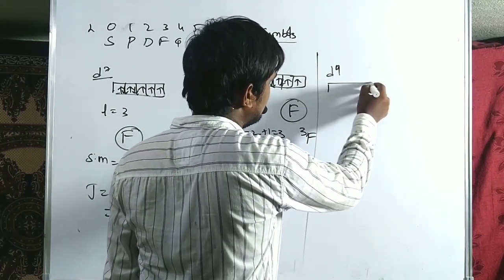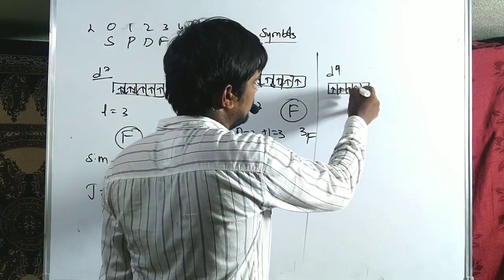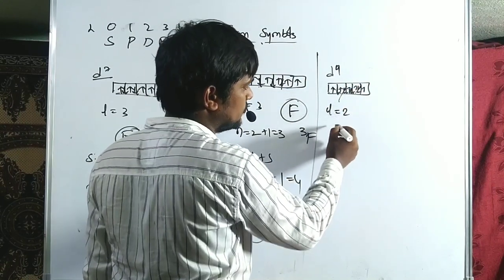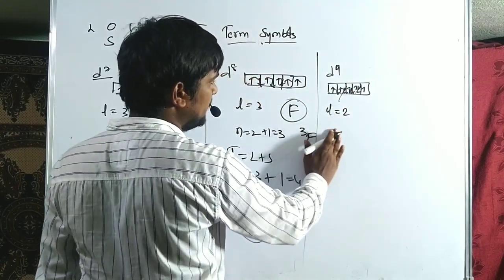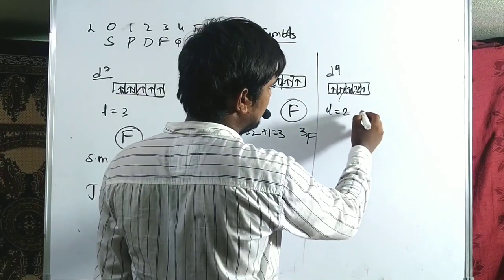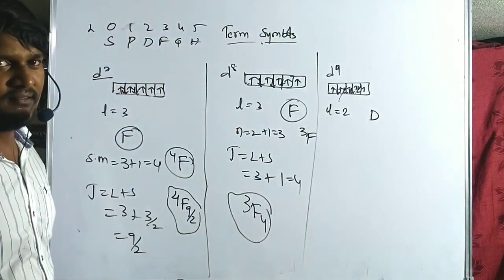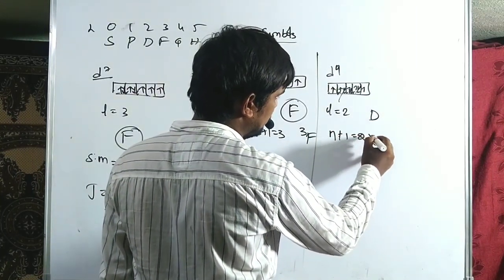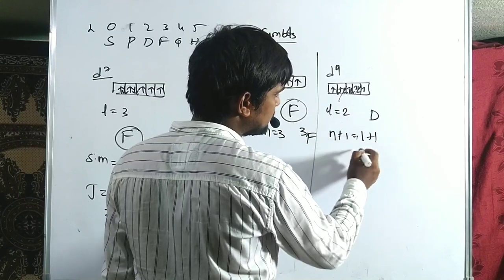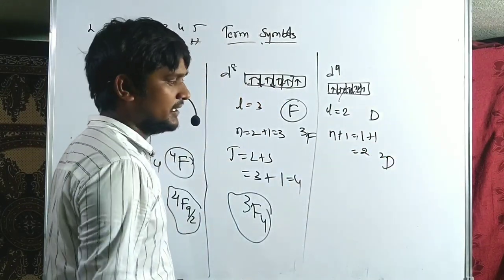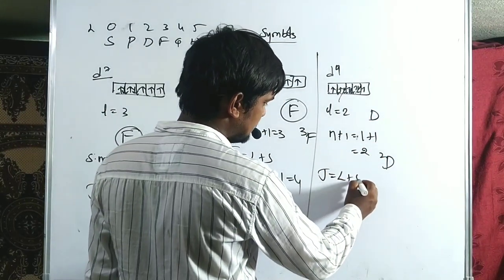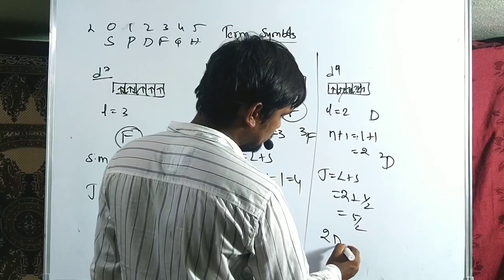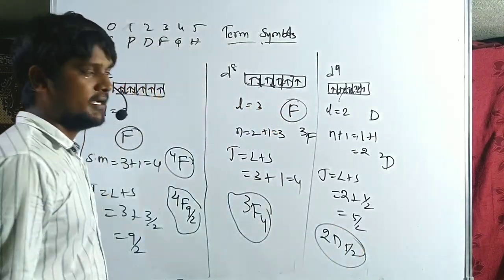For D9: nine electrons with one vacancy. Only one unpaired electron at ML = +2 remains after cancellations, so L = 2, term is D. Multiplicity = 1+1 = 2, giving 2D. More than half-filled, J = L+S = 2+1/2 = 5/2. Ground term symbol for D9 is 2D(5/2).